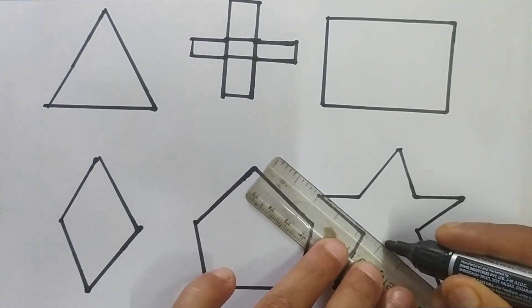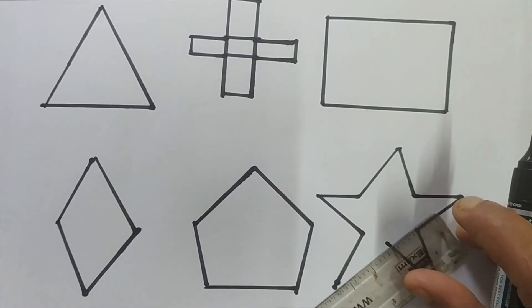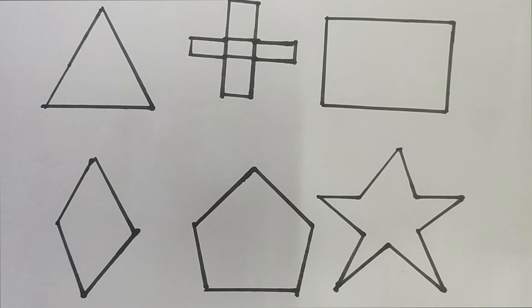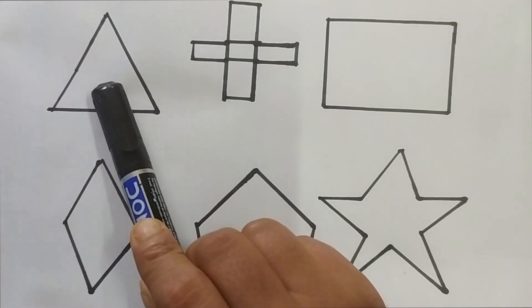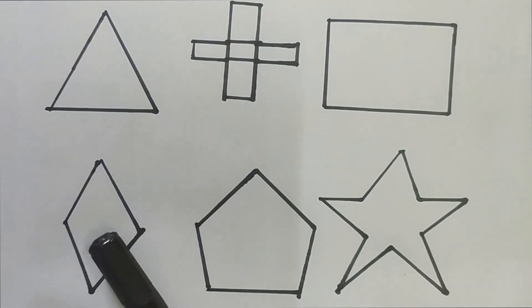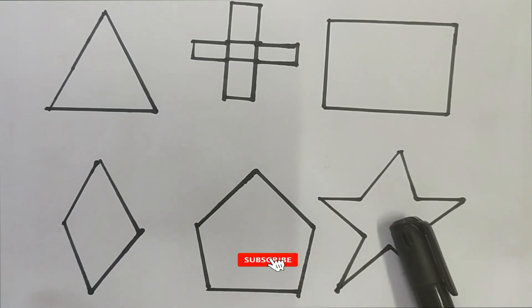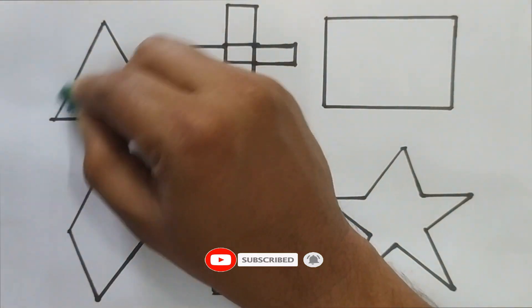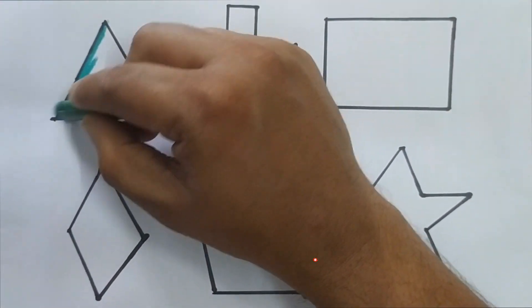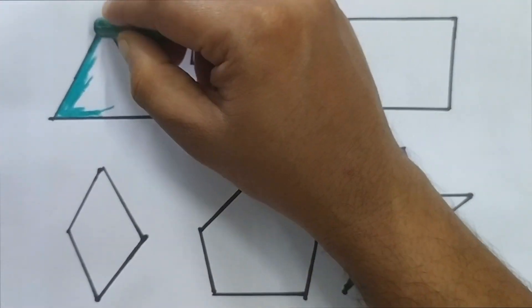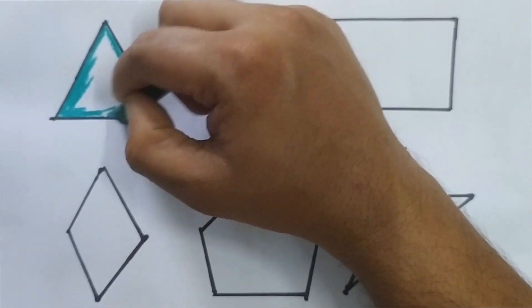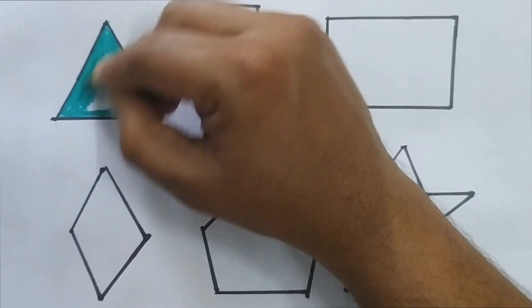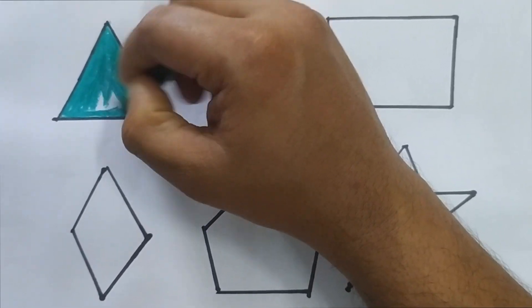Now we are drawing star. This is star. Triangle, cross, rectangle, rhombus, pentagon, star. Let's color those shapes.